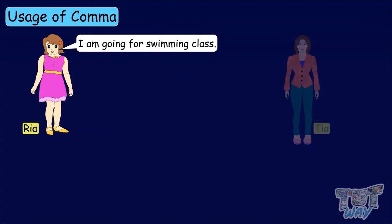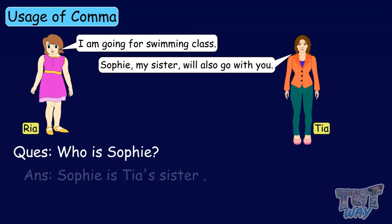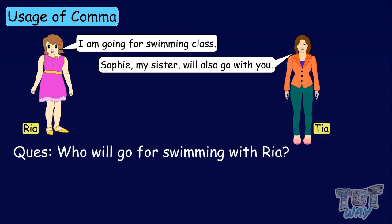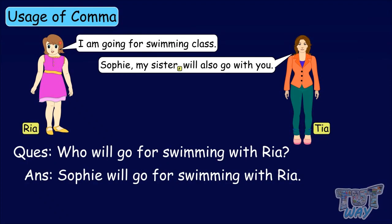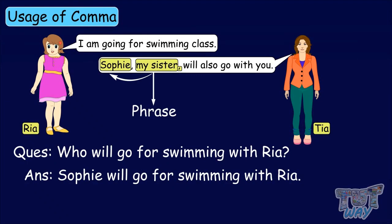Here we have another conversation. I am going for swimming class. Sophie, my sister, will also go with you. Who is Sophie? Sophie is Tia's sister. Who will go swimming with Ria? Sophie will go for swimming with Ria. Because of the second comma in the sentence — Sophie, my sister — 'my sister' is a phrase explaining Sophie. It means Sophie is the name of Tia's sister. As Tia says, Sophie, my sister, will also go with you — meaning my sister Sophie will go with you, and 'you' refers to Ria.